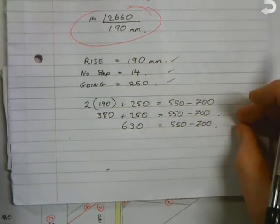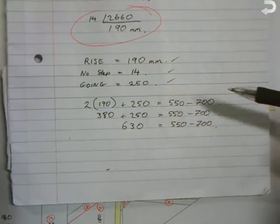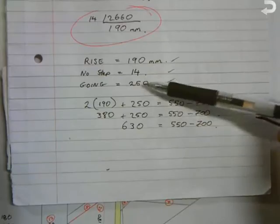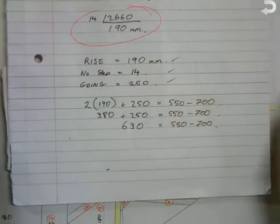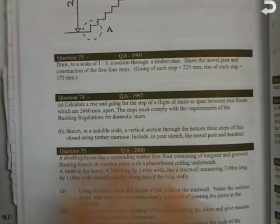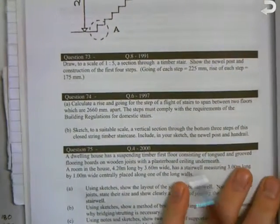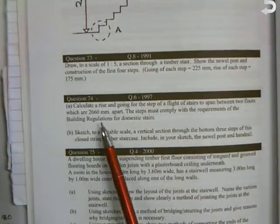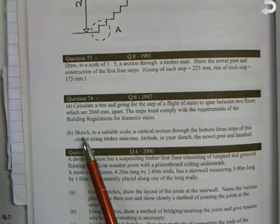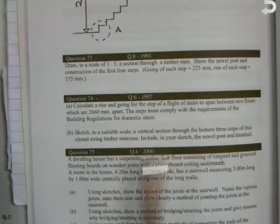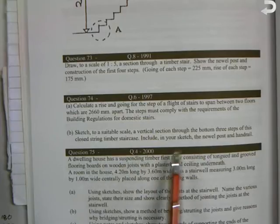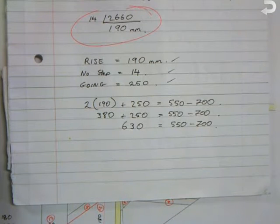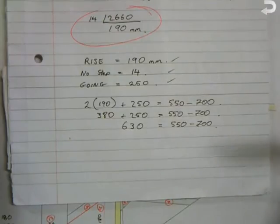Now the second part of the question then is to draw out the stairs using these measurements, so using a measurement of 190, using a going of 250. Looking at this question, the steps must comply with the regulations of building regulations for domestic stairs. Next thing then is sketch to a suitable scale the vertical section through the bottom three steps of a closed string timber staircase, including your measurements, newel post, and handrail. So the final stage then is just to draw the stairs, the bottom three steps that we did the last day in class.